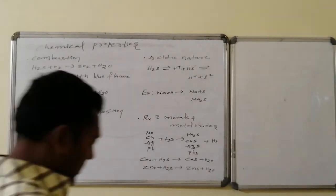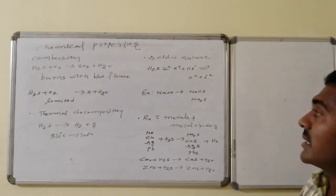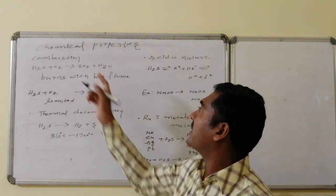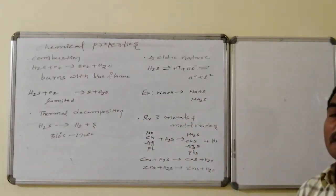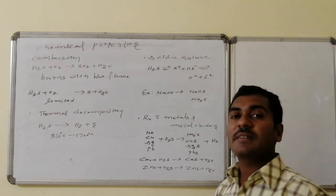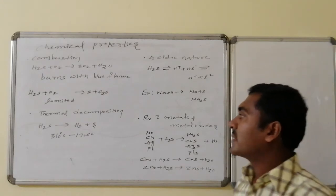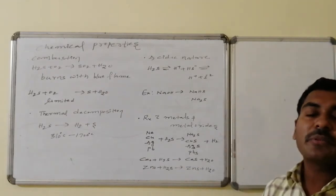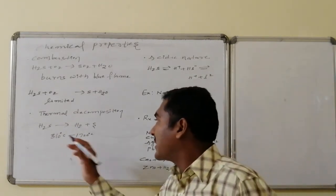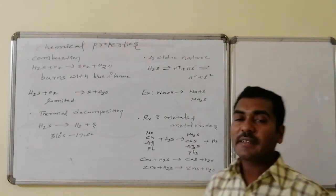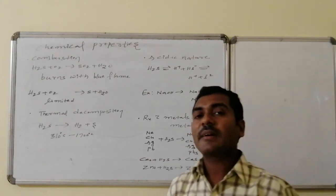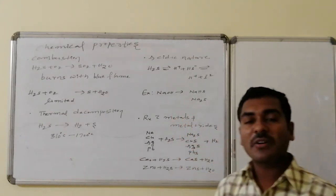Chemical properties: H₂S undergoes combustion. In excess oxygen it is converted to water and sulfur dioxide, burning with a blue flame. In limited oxygen supply, it is converted to sulfur and water. H₂S also undergoes thermal decomposition, starting at around 300–310°C and completing at approximately 1700°C, producing hydrogen and sulfur.